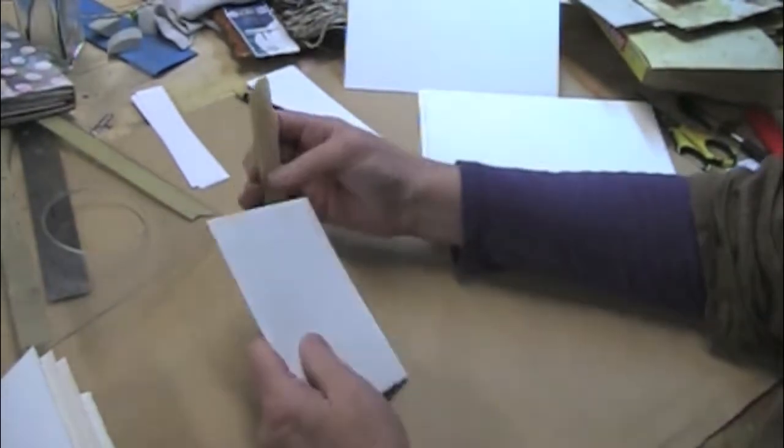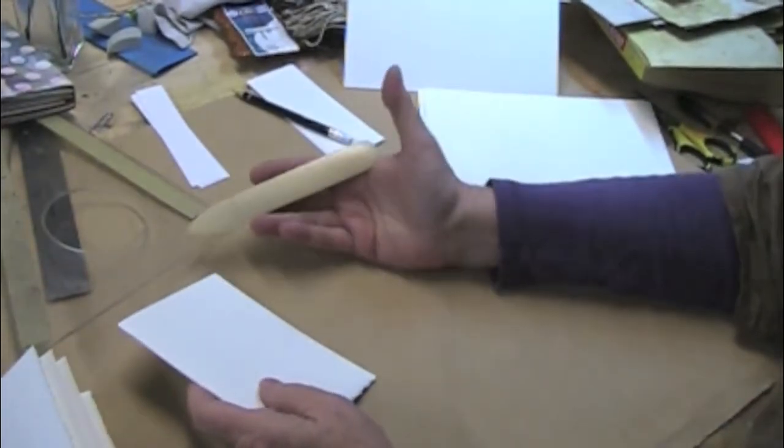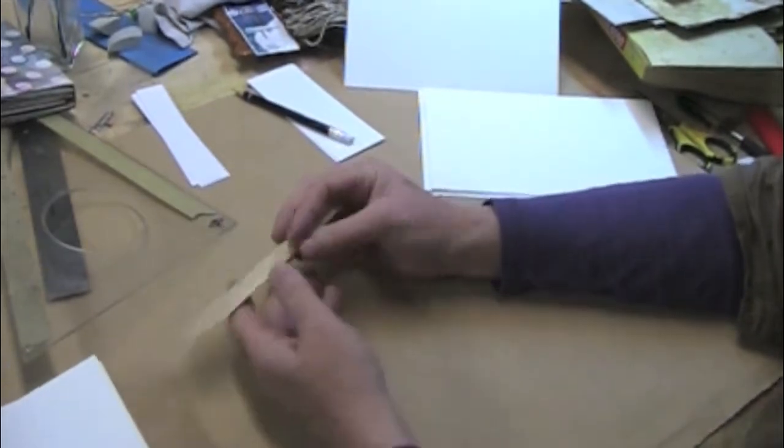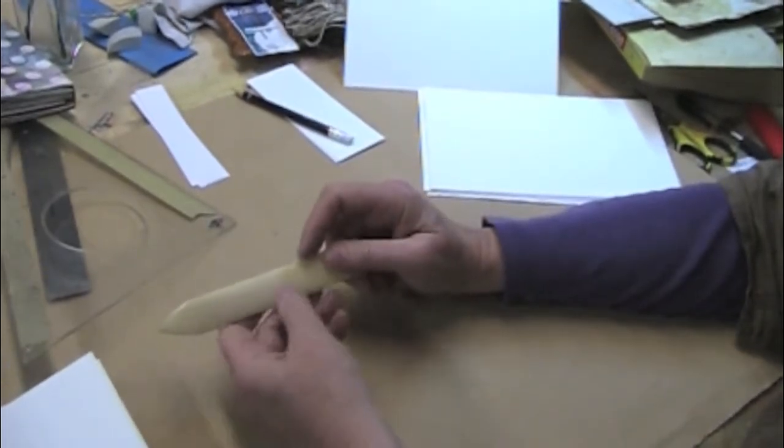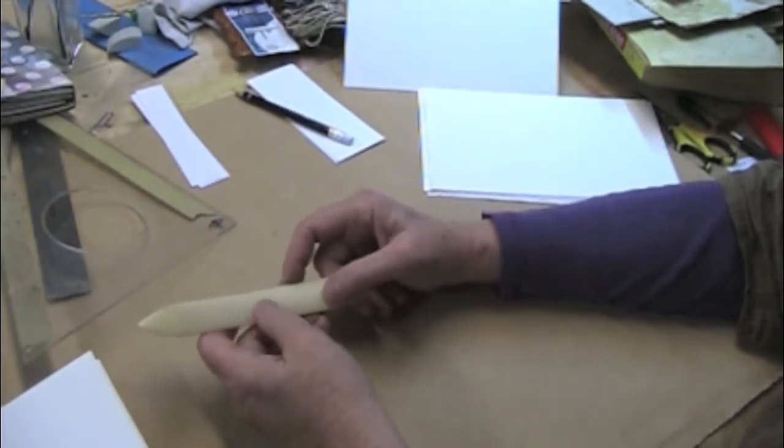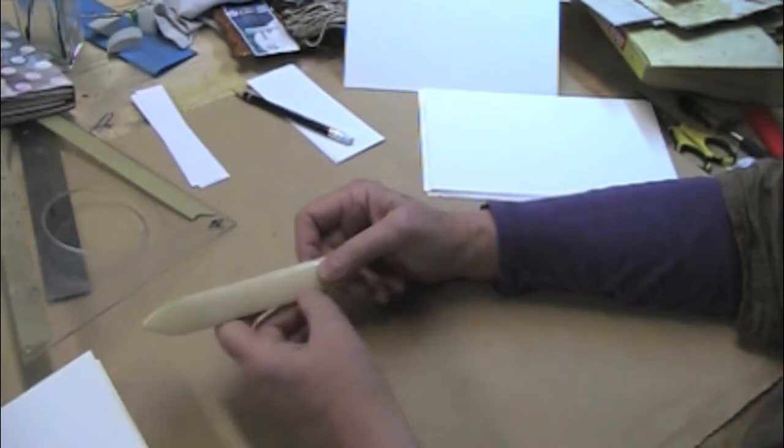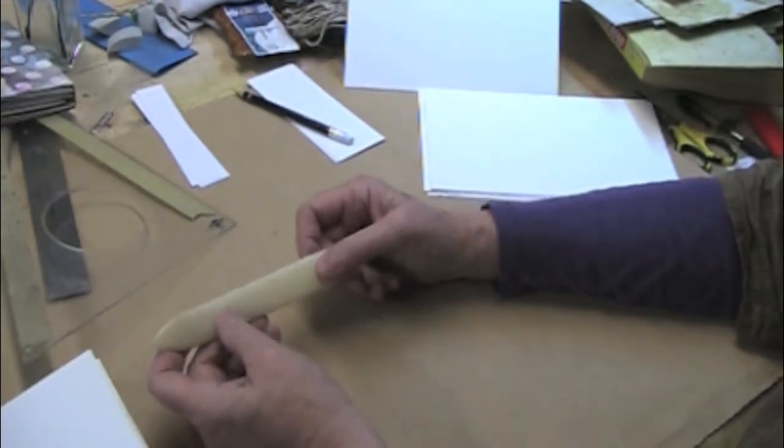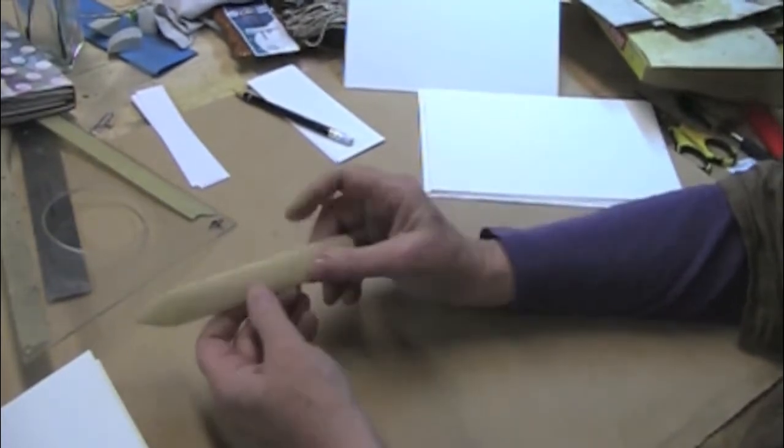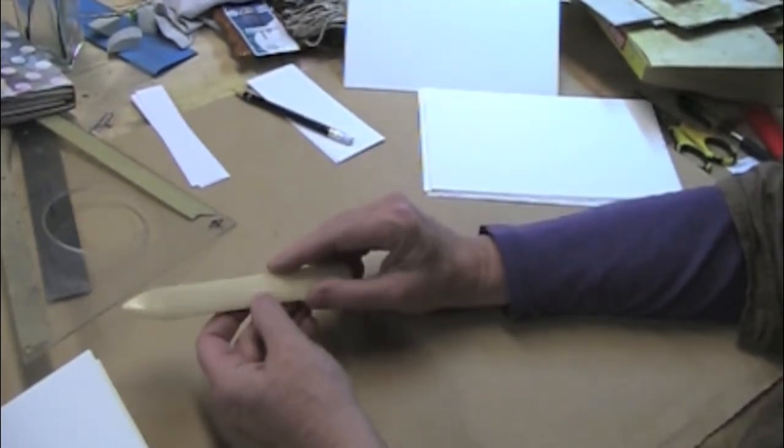Now I'll give you a tip about the bone folder. This is a fairly decent, probably Linoco bone folder, and I soak mine when I first get it. I soak mine in olive oil for at least 24 hours, and it not only takes on a nice color, but the oil permeates the material. This is probably not bone, and it makes it easier to slide.